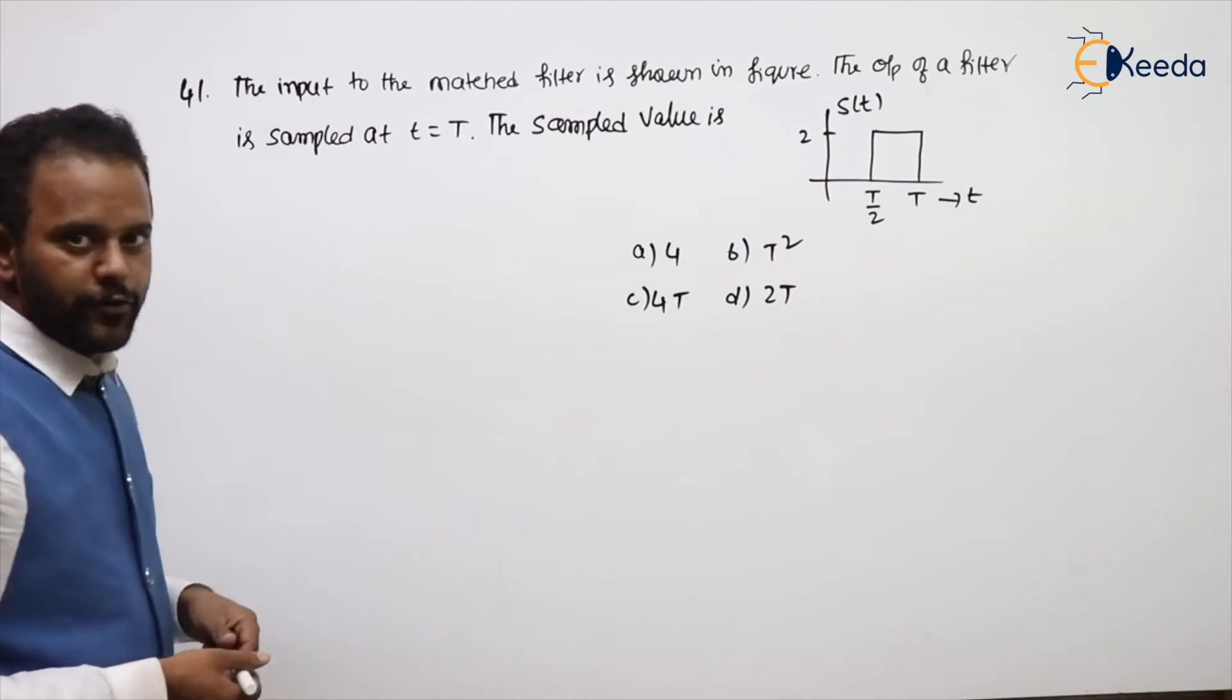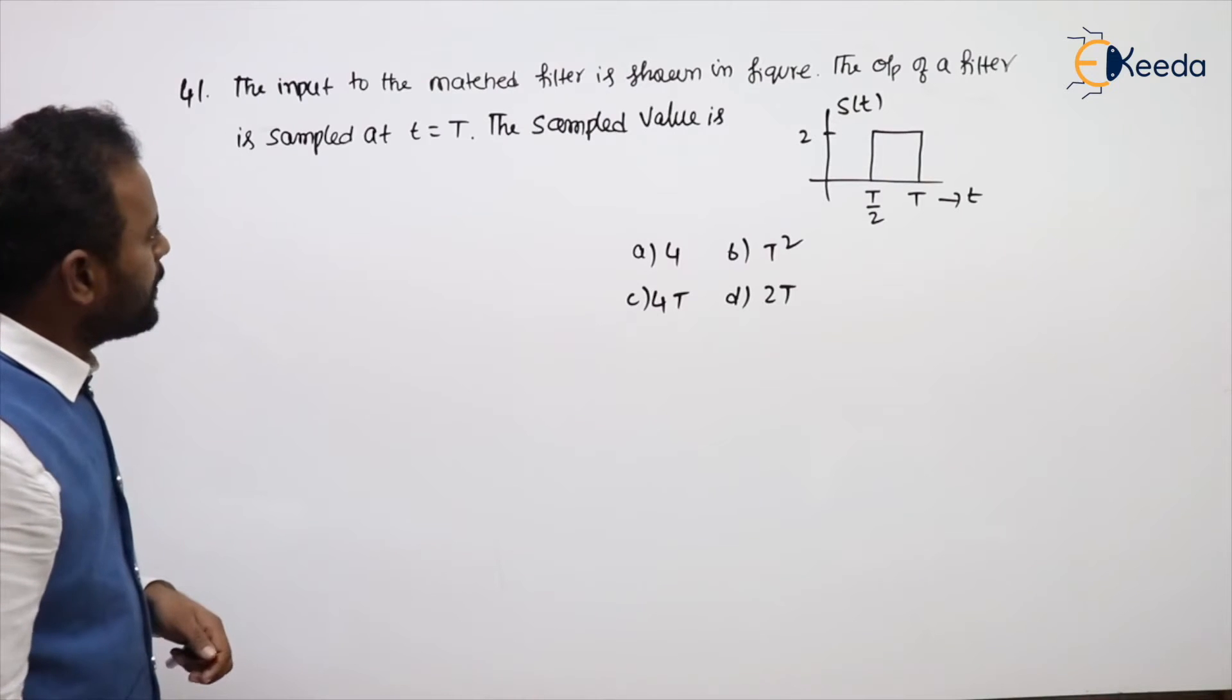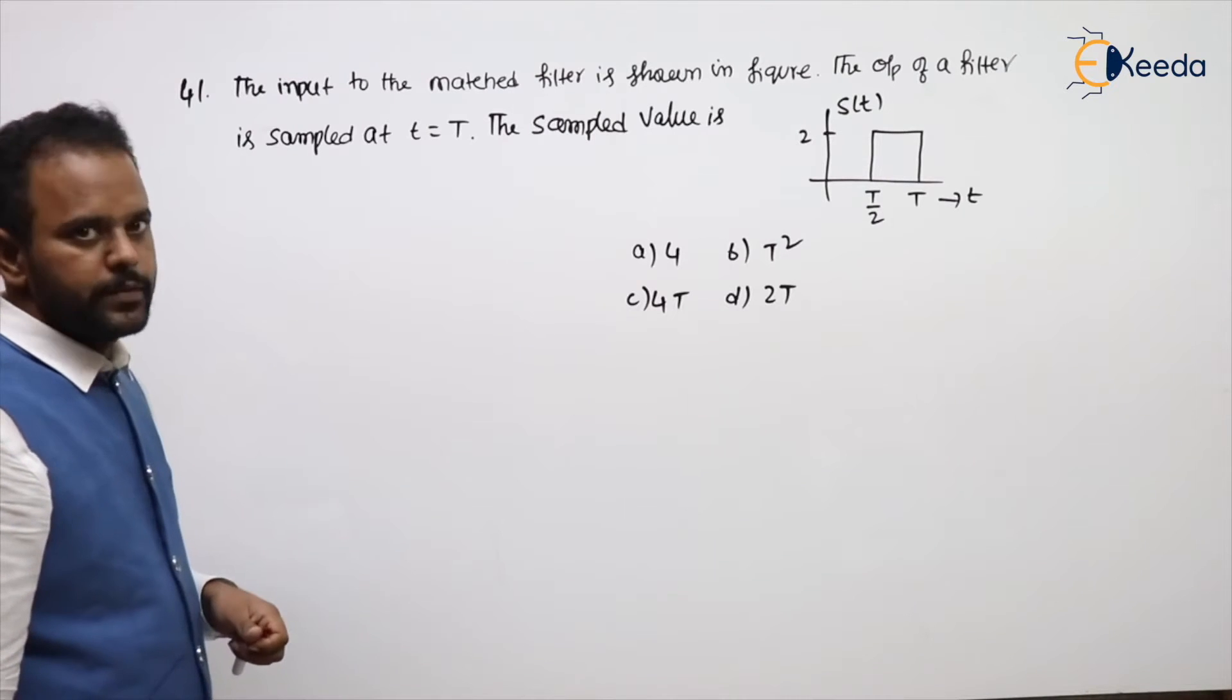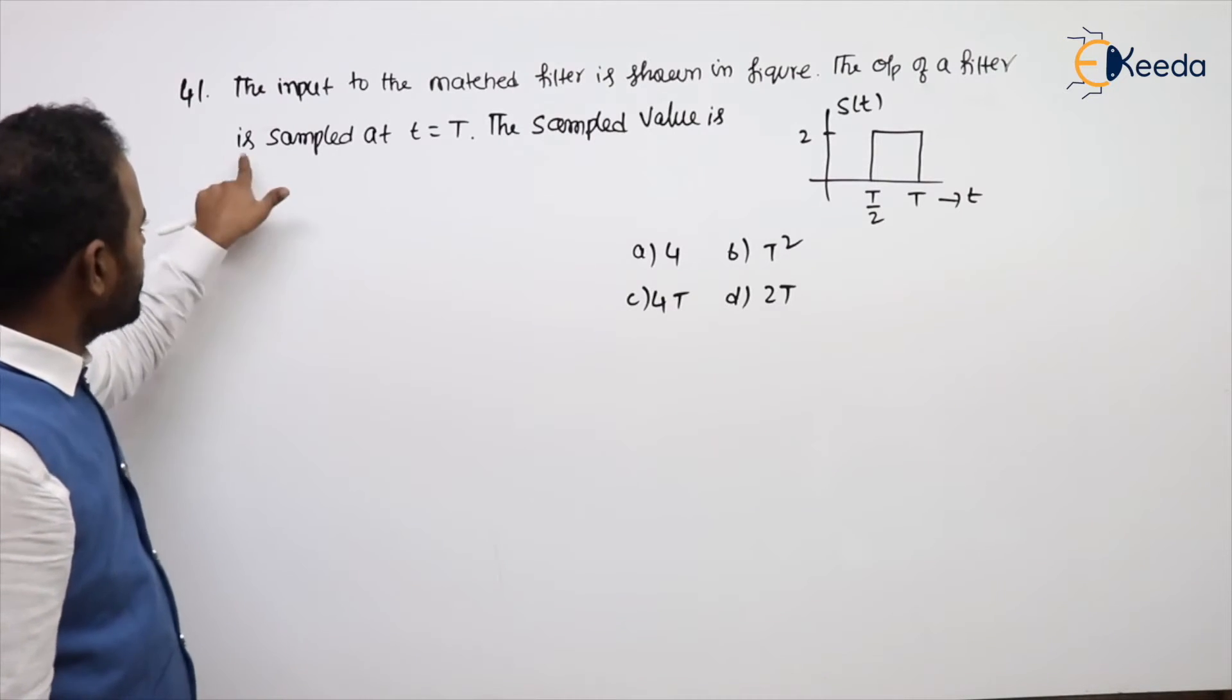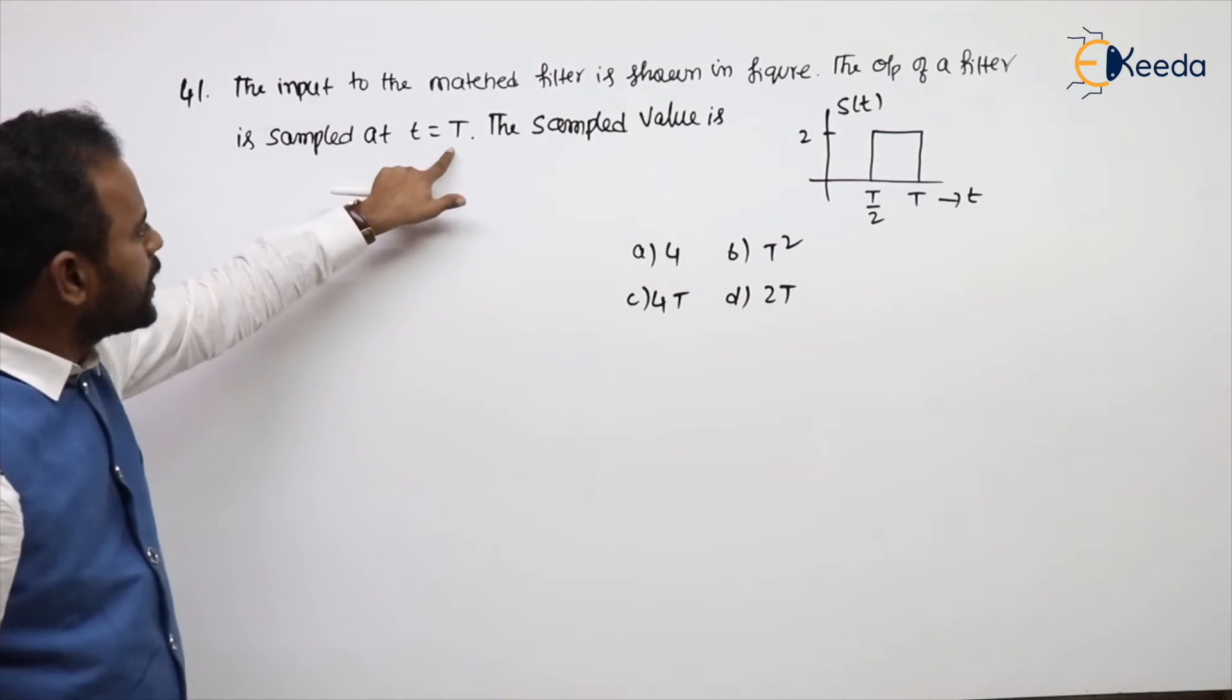See the problem on matched filter. The input to the matched filter is shown in the figure. The output of a filter is sampled at T equal to capital T.